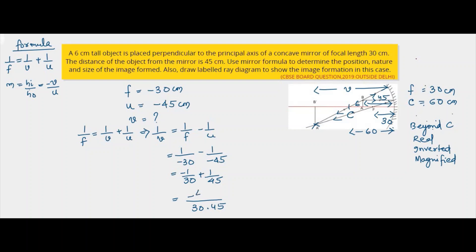So 30, 30, 30 gets cancelled. It is minus 45 plus 30. So it comes to be 1 by V is minus 15 by 30 into 45, which is minus 1 by 90. So V comes to be minus 90 centimeter. So this is our image distance.